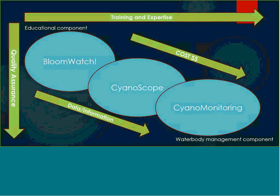Our program is basically composed of three main components: a BloomWatch component, a Cyanoscope component, and a CyanoMonitoring component. These all overlap to a certain extent. We start with a basic BloomWatch, which is primarily an educational component with some valuable data collected, and it gets increasing in complexity to the CyanoMonitoring end of things, where we feel the data is useful for water body management.